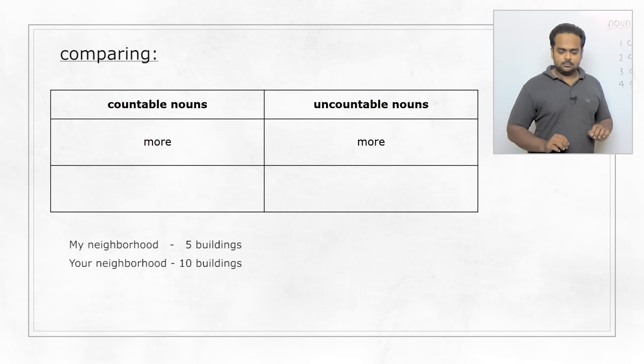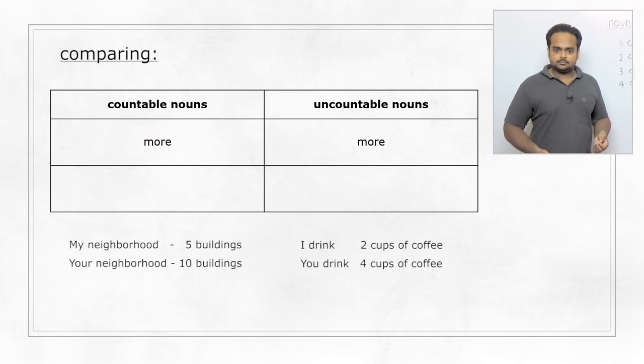And let's take another example, this time uncountable nouns. I drink two cups of coffee a day, but you drink four cups of coffee a day. So you drink more coffee. Okay, so far so good. But what about the opposite? We can say that I drink less coffee. Alright, but back to our first example, we said there are more buildings in your neighbourhood. That means in my neighbourhood, there are fewer buildings. This is where a lot of people go wrong. People say there are less buildings in my neighbourhood. That is grammatically incorrect because with countable nouns, you cannot use less—you have to use fewer to compare. Okay, so remember these rules and remember not to make the common mistakes that we discussed here.